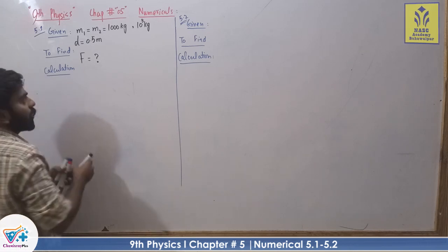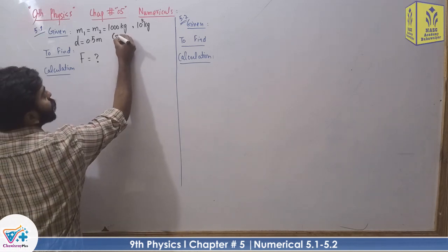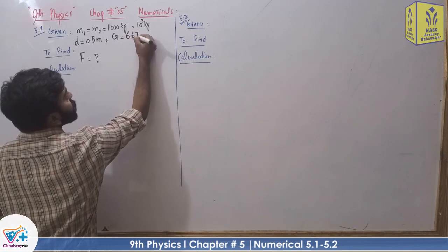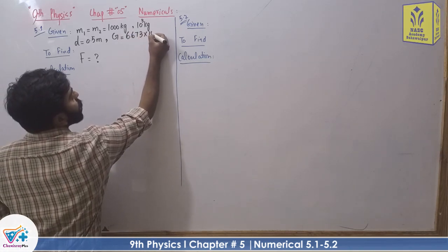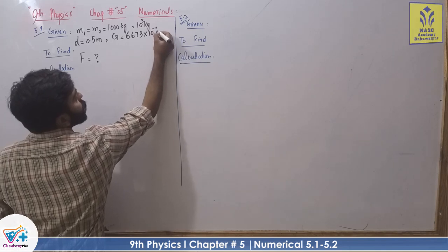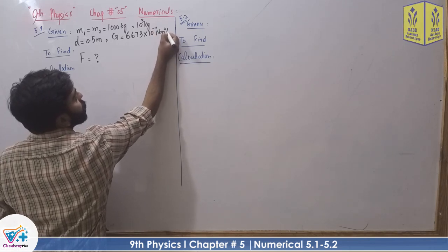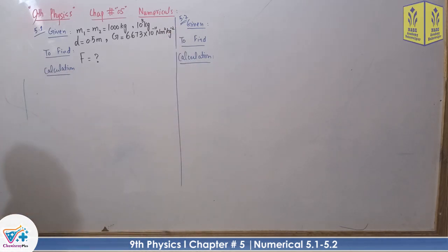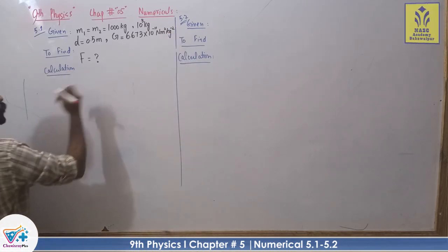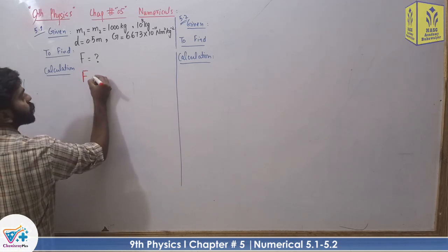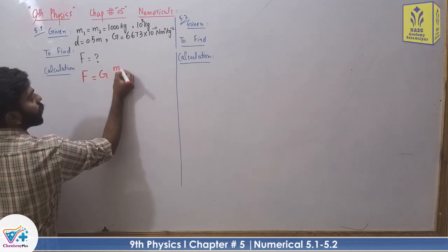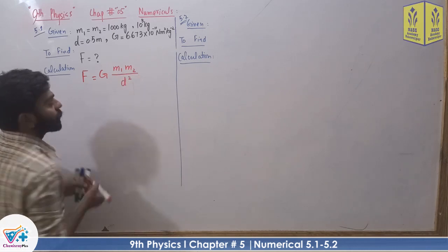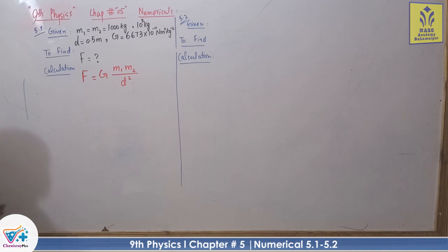For gravitational force, you have a gravitational constant which is given by the examiner, but you should know that G = 6.673 multiplied by 10 raised to the power of minus 11, with unit Newton-meter squared per kg squared. The gravitational force formula is F = G·M₁·M₂ divided by D squared.